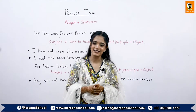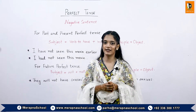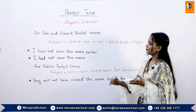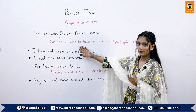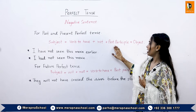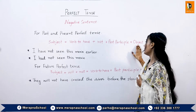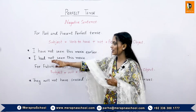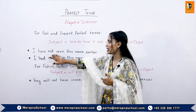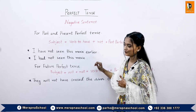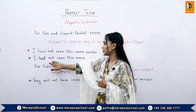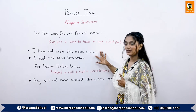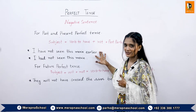The perfect tenses can also be converted into the negative form. For past and present perfect tenses, the structure is: subject, verb to have, not, past participle form of the verb, then the object or rest of the sentence. For example: I have not seen this movie earlier. I had not seen this movie.